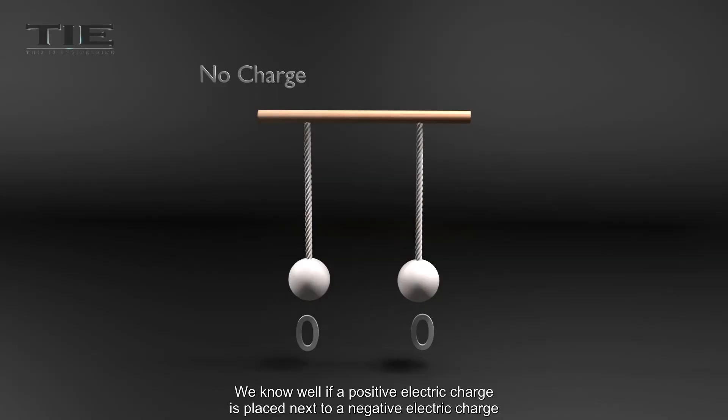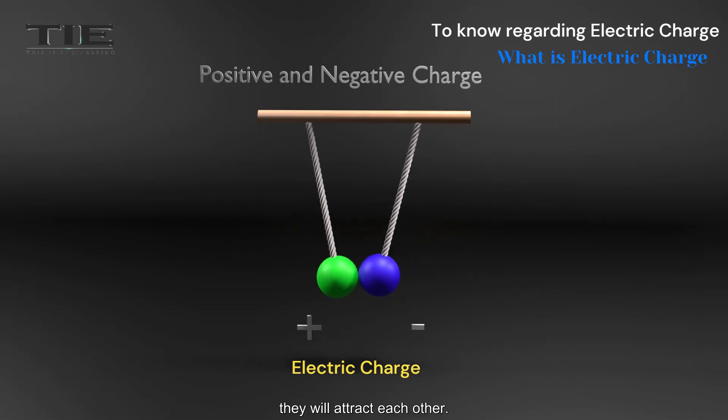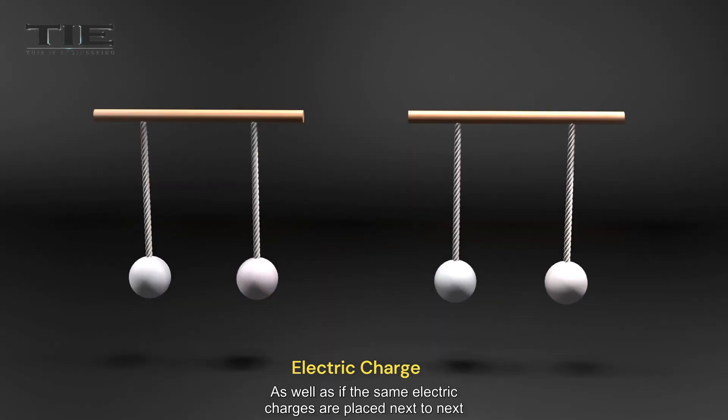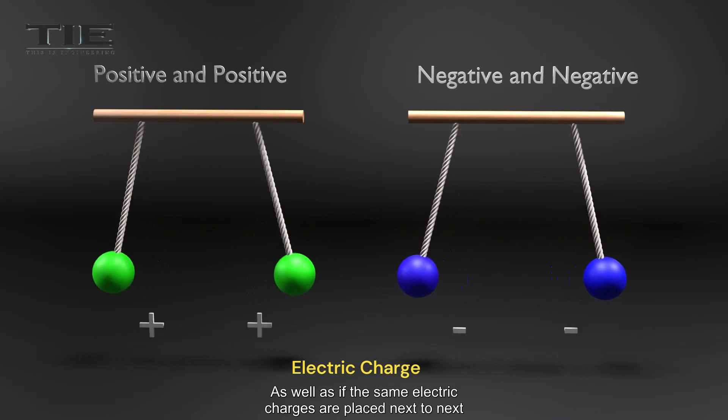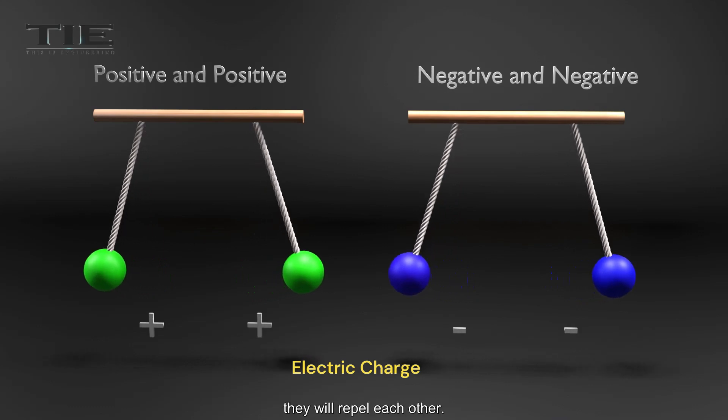We know well if a positive electric charge is placed next to a negative electric charge, they will attract each other. As well as, if the same electric charges are placed next to each other, they will repel each other.